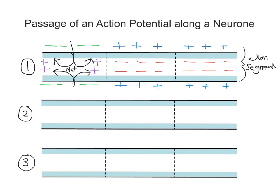So what we have is sodium ions, Na+, rushing into this region. That creates this difference in charge — we end up getting positive charges inside, and because we've had sodium rushing in, the outside becomes more negative. So the first thing that happens is sodium rushes in to this axon segment. When these positively charged sodium ions rush into this depolarised region of the neuron, we find they are attracted sideways to the regions on either side, which have a more negative charge. So we get this positive-negative attraction, and what we set up is a localised current, or circuit.